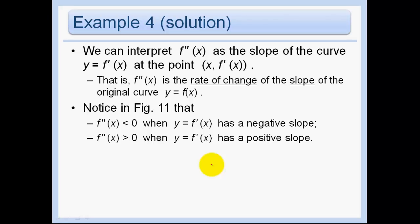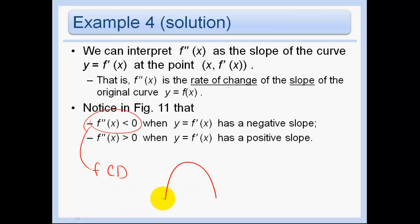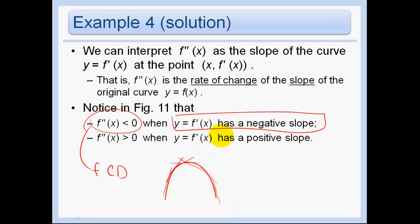In our last example, we can interpret f prime prime as the slope of the curve of f prime — the rate of change of the slope, the rate of change of the rate of change of the original curve. When f prime prime is less than zero, we know the function is concave down, meaning that the slope is getting more and more negative over time; f prime has a negative slope.